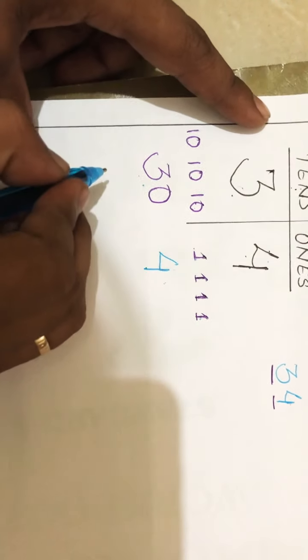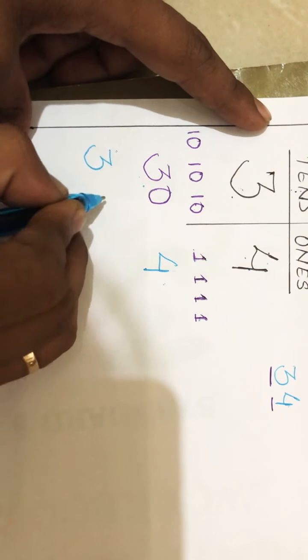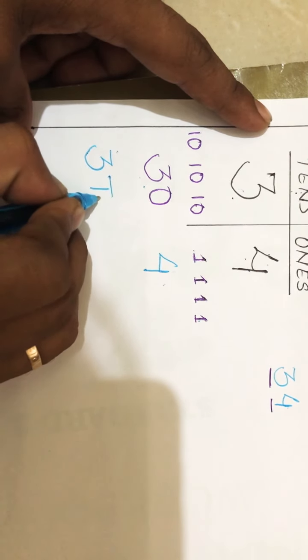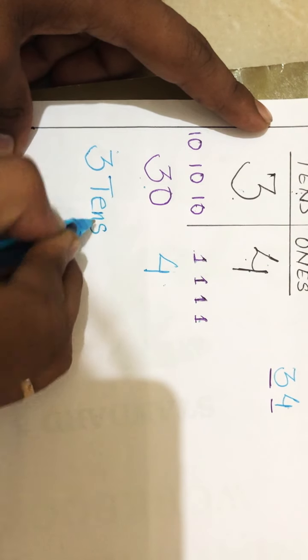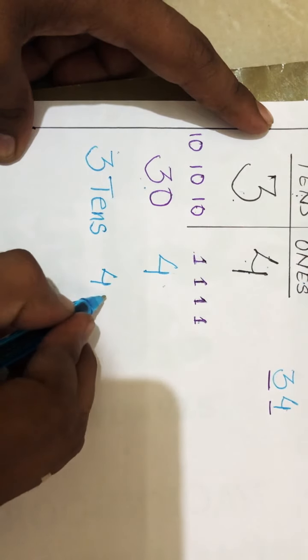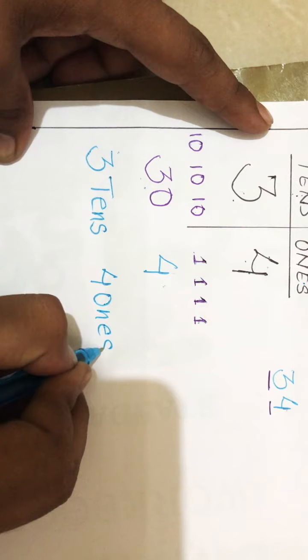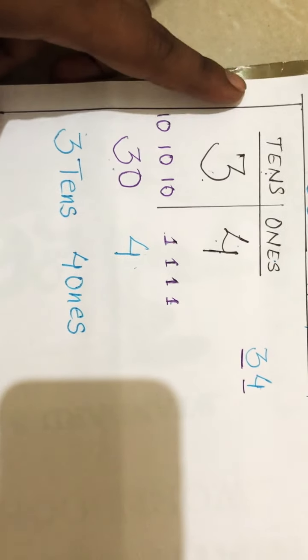This is the place value. Or else we can write like this also - three tens and four.